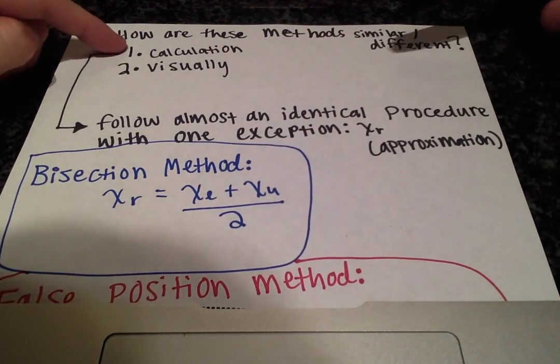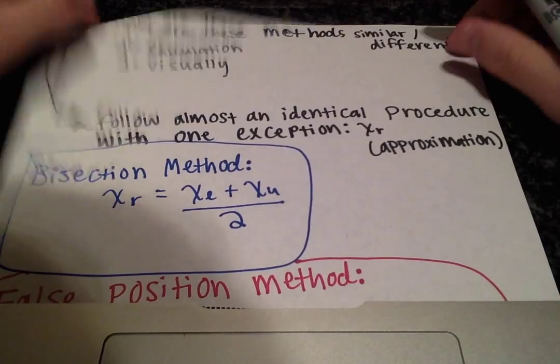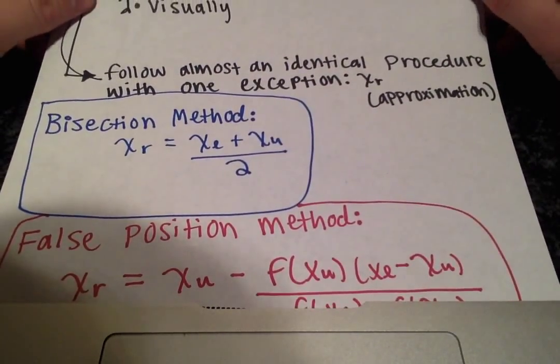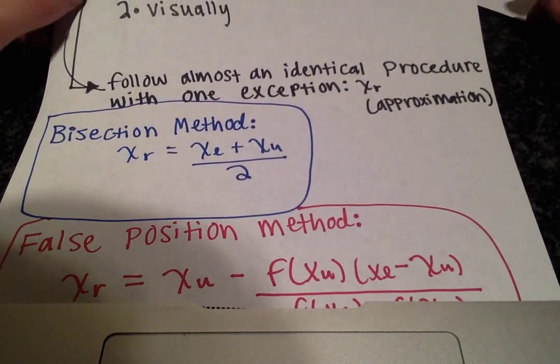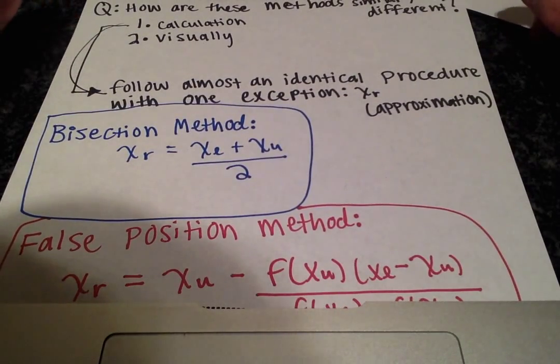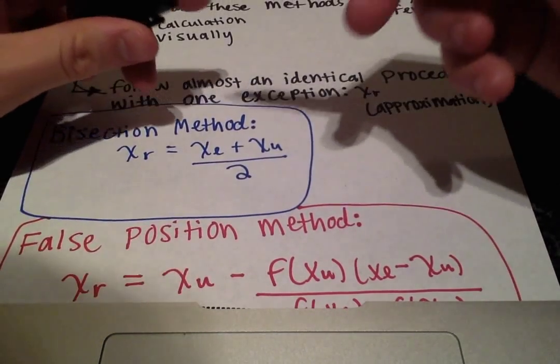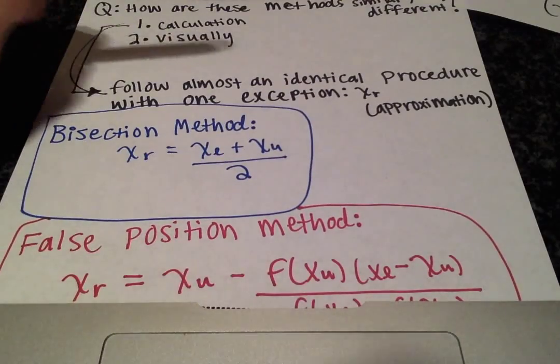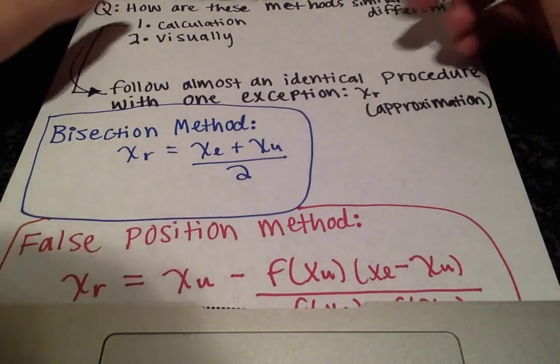Alright, so if we look at the calculation, the path of the calculation is very similar. You're going to have your lower and upper limits, you're going to calculate an x_r value, and then you're going to test the sign of the product of f of x_l and f of x_r, but the important difference here is how x_r is calculated.